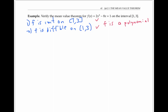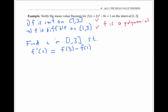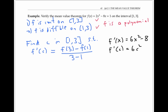Now we need to verify that the conclusion of the mean value theorem holds. In other words, we need to find a number C in the interval [1, 3] such that the derivative of F at C is equal to the average rate of change of F on the interval from one to three. F'(x) is 6x² minus 8, so F'(C) is just 6C² minus 8.